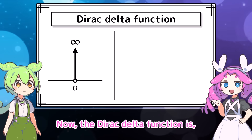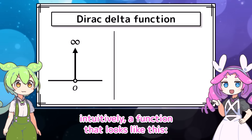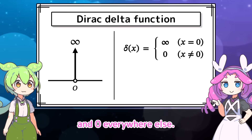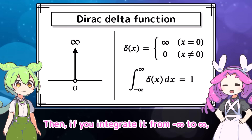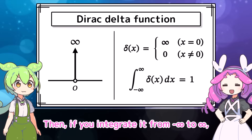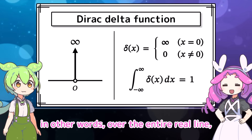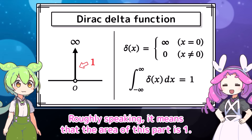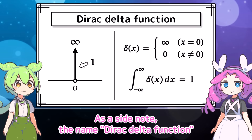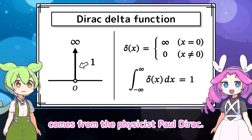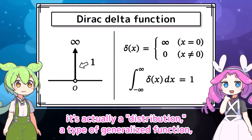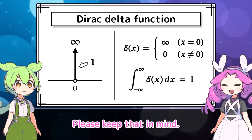The Dirac delta function is, intuitively, a function that takes the value infinity at x equals 0 and 0 everywhere else. If you integrate it from negative infinity to infinity — over the entire real line — the result is 1. Roughly speaking, the area of this part is 1. The name Dirac delta function comes from the physicist Paul Dirac. Even though it's called the delta function, it's actually a distribution — a type of generalized function — and not an ordinary function. Please keep that in mind.